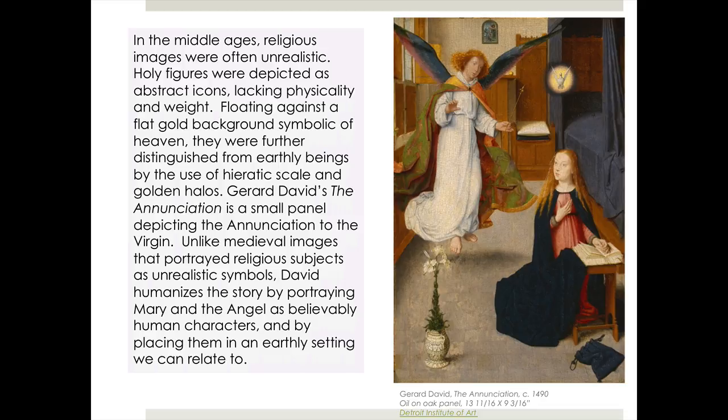So let's now draft an introduction that places this work in historical context. In the Middle Ages, religious images were often unrealistic. Holy figures were depicted as abstract icons lacking physicality and weight, floating against a flat gold background symbolic of heaven, and were further distinguished from earthly beings by the use of hieratic scale and golden halos — this should all be familiar to you, you learned this in class. Gerard David's The Annunciation is a small panel depicting the Annunciation to the Virgin. Unlike medieval images that portrayed religious subjects as unrealistic symbols, David humanizes the story by portraying Mary and the angel as believably human characters and by placing them in an earthly setting we can relate to. Do you see a thesis in that introduction?